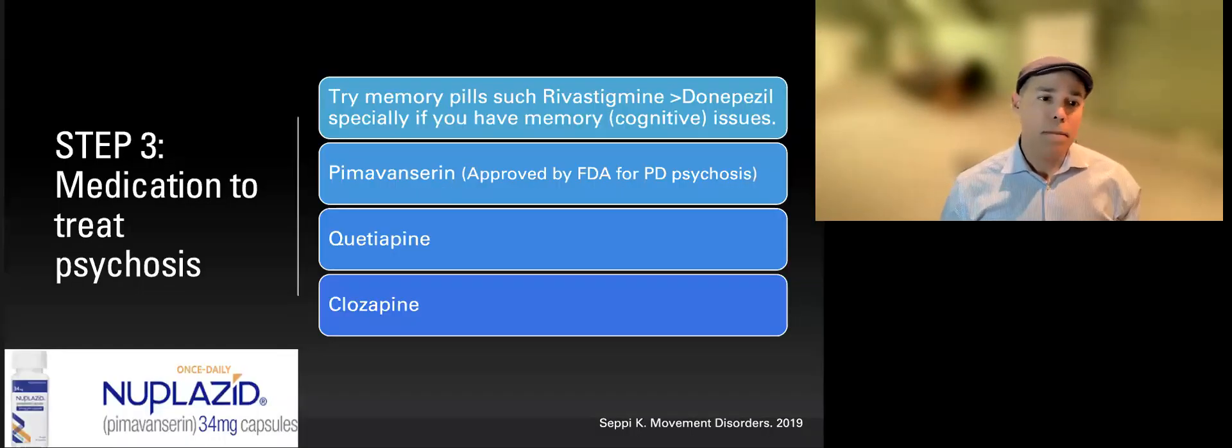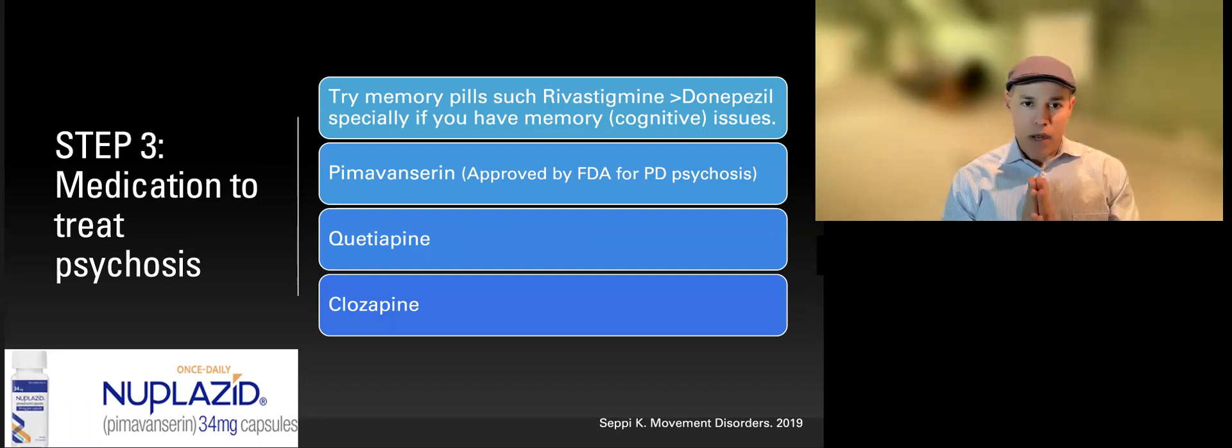Step number three: medications that we use to treat psychosis. I tend first to try what we call cholinesterase inhibitors, for example rivastigmine, which is Exelon. I use rivastigmine more because we have more data in the setting of Parkinson disease, but that doesn't mean that Aricept or donepezil might not work too. So I use those medications in the setting of cognitive issues and memory issues as a first choice.